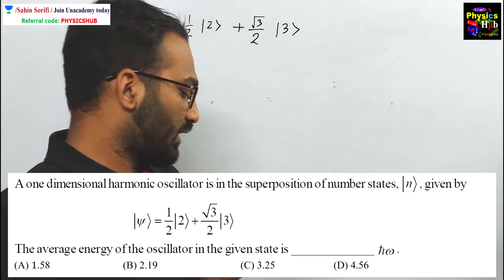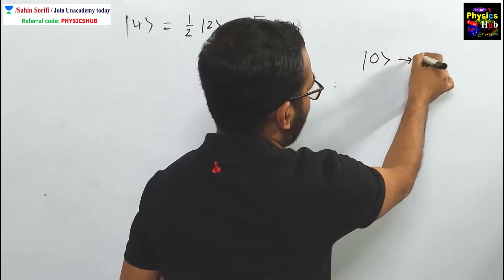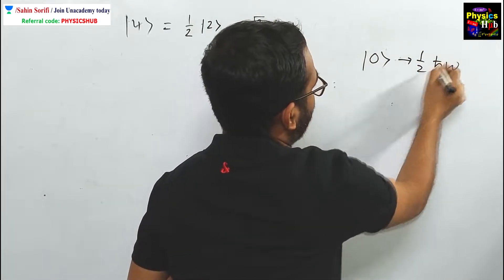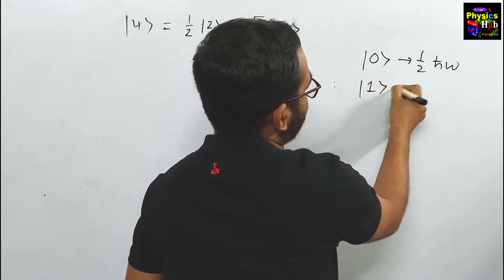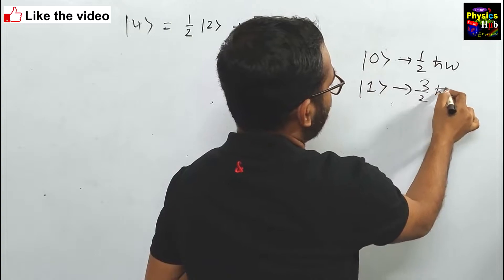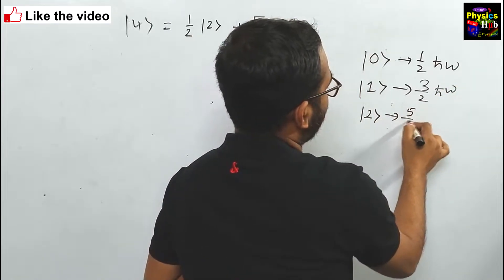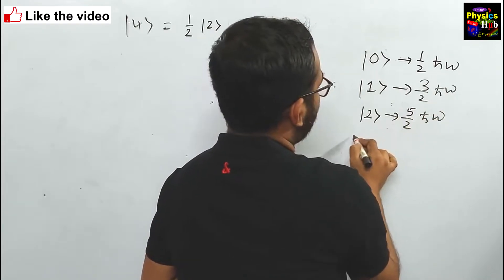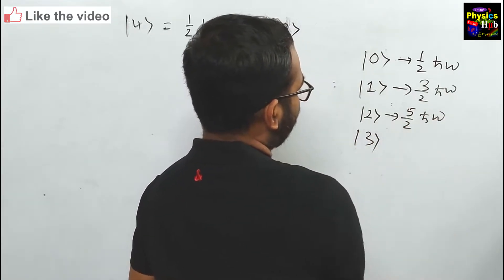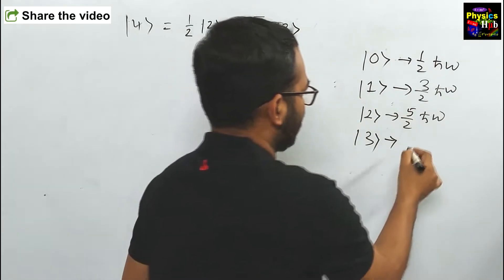For a one-dimensional harmonic oscillator, the zeroth state corresponds to energy 1/2 ℏω. State 1, the first excited state, is 3/2 ℏω. Second excited state is 5/2 ℏω. Third excited state is 7/2 ℏω.